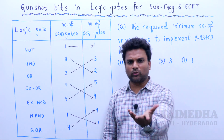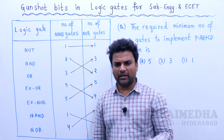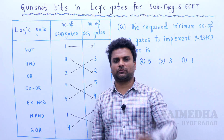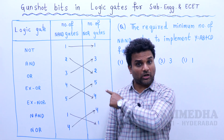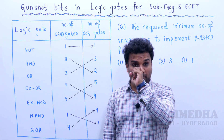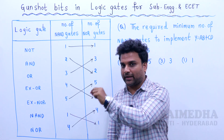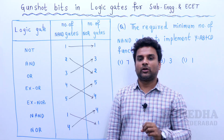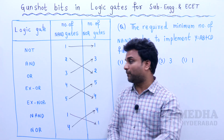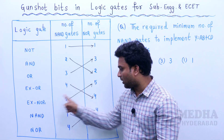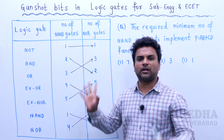It is very easy. The number of NAND gates required to implement a NAND gate is 1, and the number of NOR gates required to implement XNOR gate — remember this sequence.